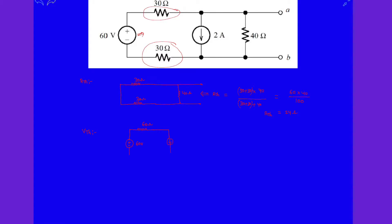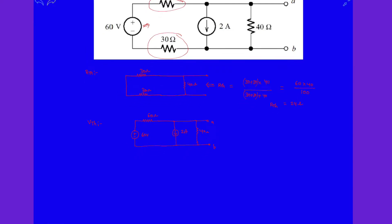The 2 amp source is here and this is 40 ohms resistance. These terminals are A and B. Let's say this is V_th. That doesn't mean this voltage is V_th.